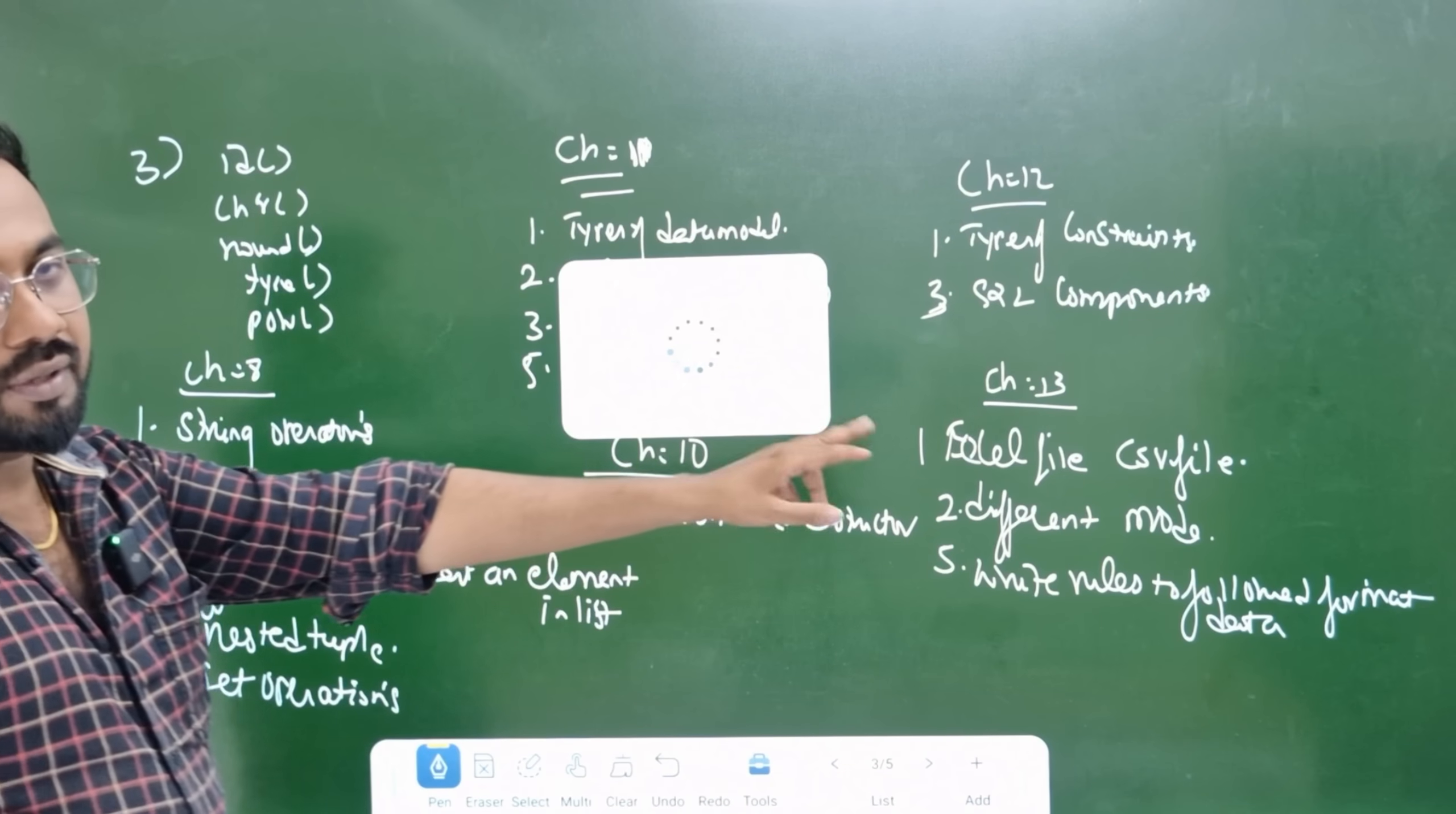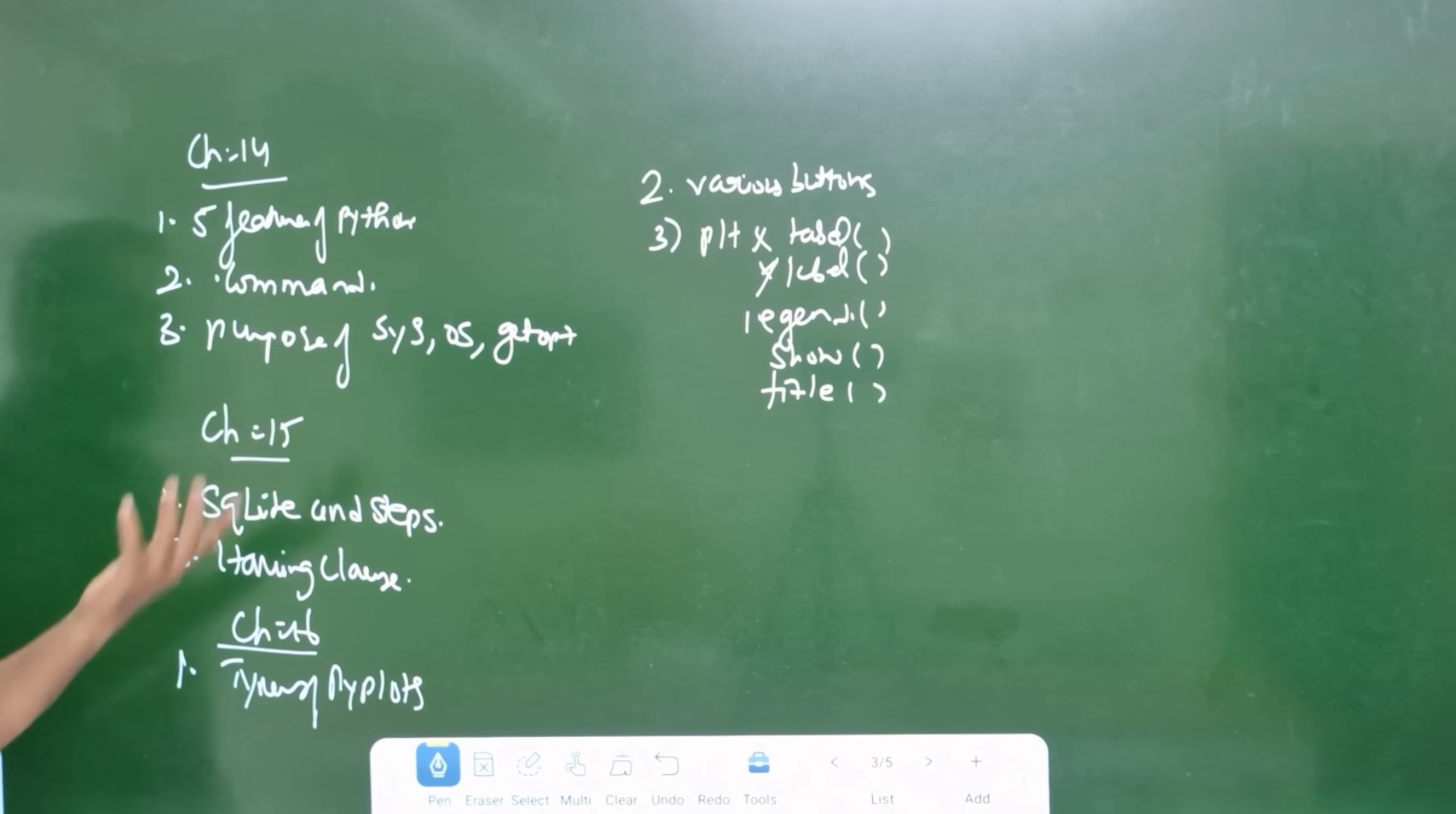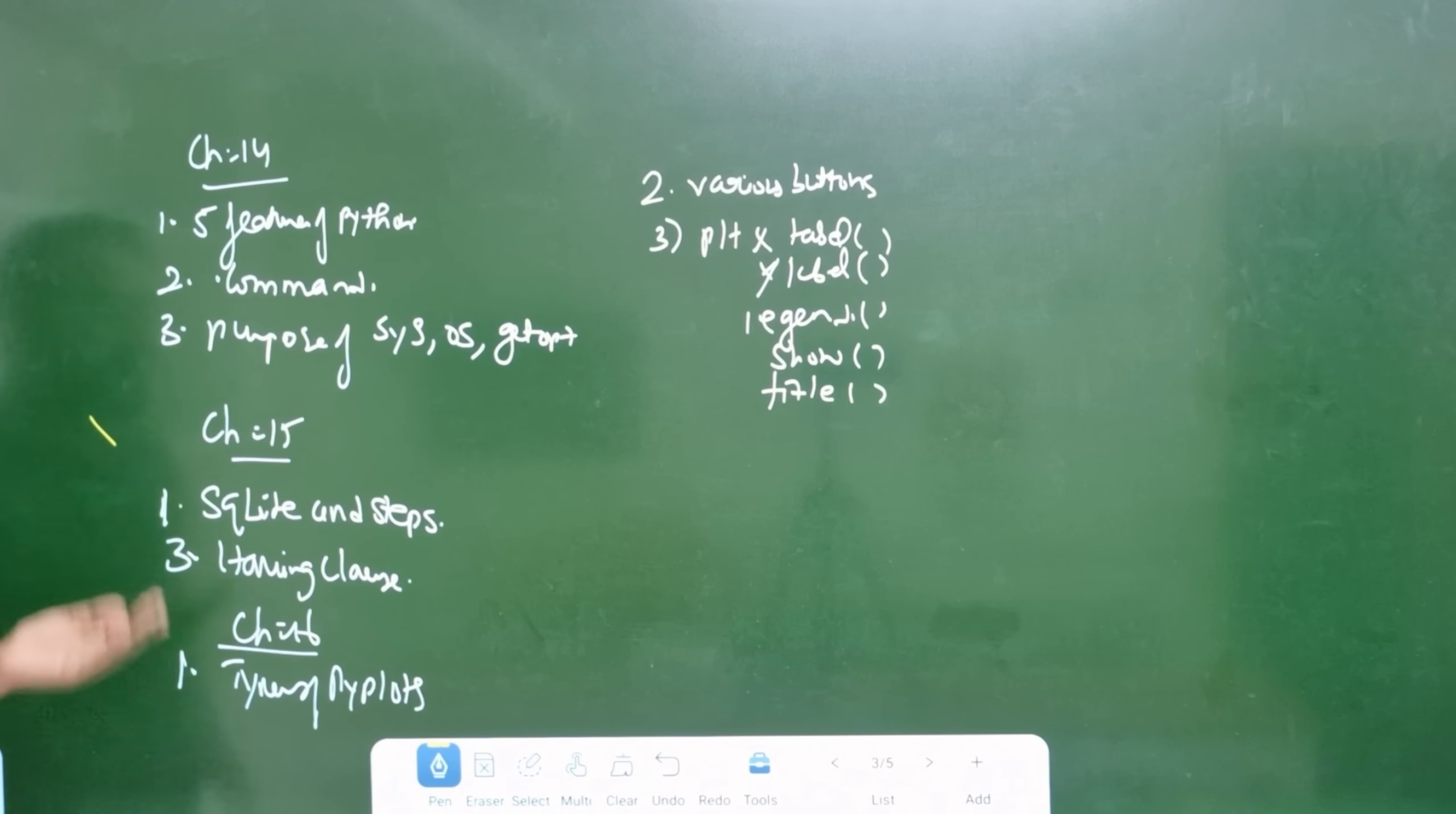Chapter 13 is important. The last chapters are easier. Chapter 14 covers 5 features of Python - very important. Comments, and purpose of sys, os, getopt modules - very important question. Chapter 15 is SQLite and steps, having clause - very easy. Chapter 16 covers pie plots and types, and buttons.